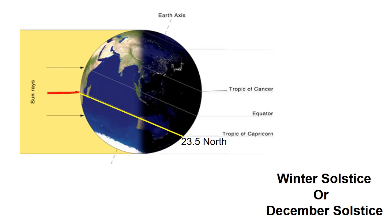Now let's learn about the winter solstice, also known as the December solstice. On this day, the tilt of the Earth's axis is inclined away from the sun, resulting in the shortest day and longest night of the year in the northern hemisphere, and vice versa in the southern hemisphere.